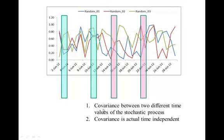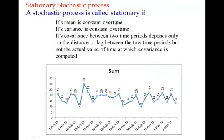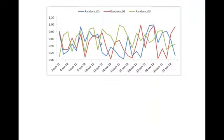Covariance is time-independent; what matters is the lag — how far apart the two data points are. It doesn't matter whether you are measuring from the 4th or from the 16th; what matters is that both are six data points apart. To summarize the three conditions: mean is constant over time, variance is constant over time, and covariance between two time periods depends only on the distance between them, not on the actual time at which they are taken. If these three conditions hold, you call the series stationary.